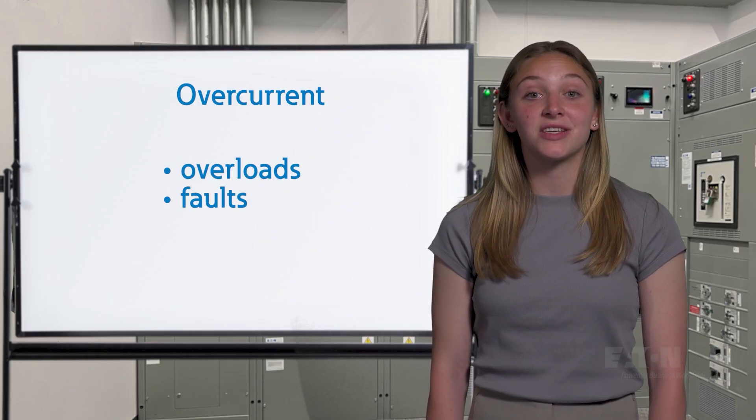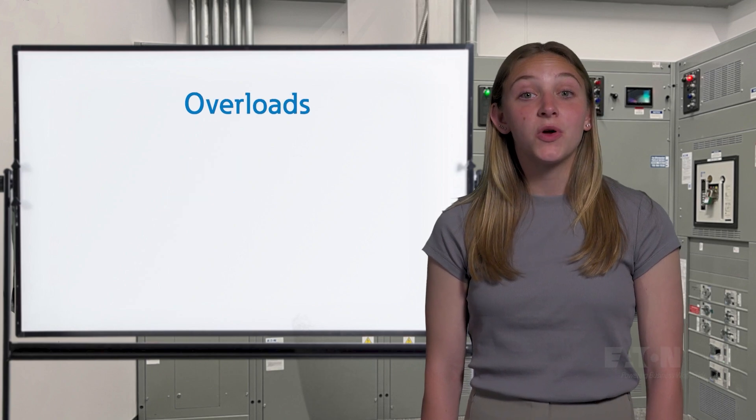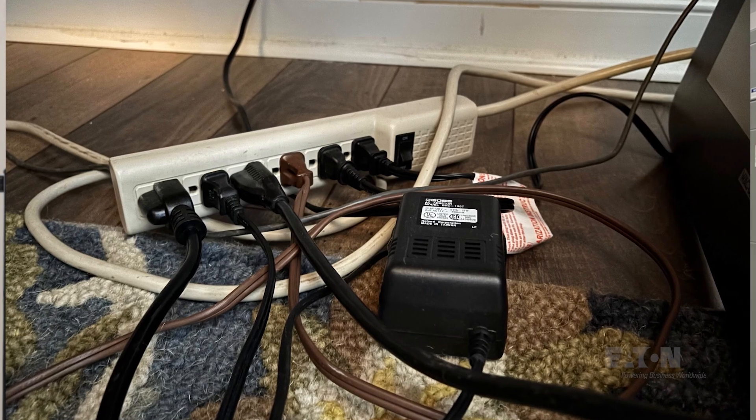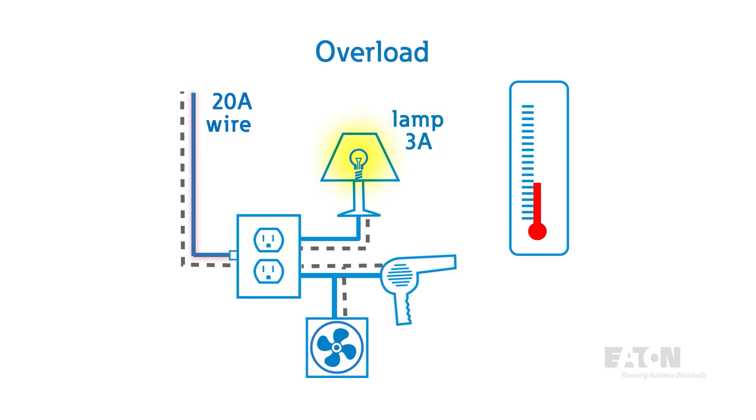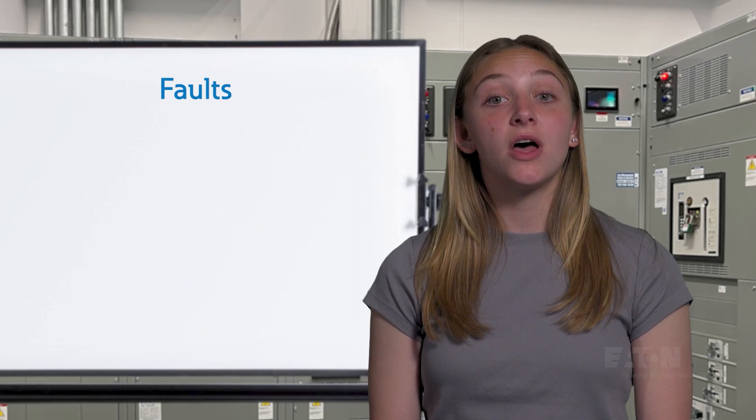This is based on what's causing the excess current. In overloads, we have too many devices or loads trying to draw current, and the total power draw is too much for the system. The key point is that current is flowing along the intended path, but there's just too much of it.